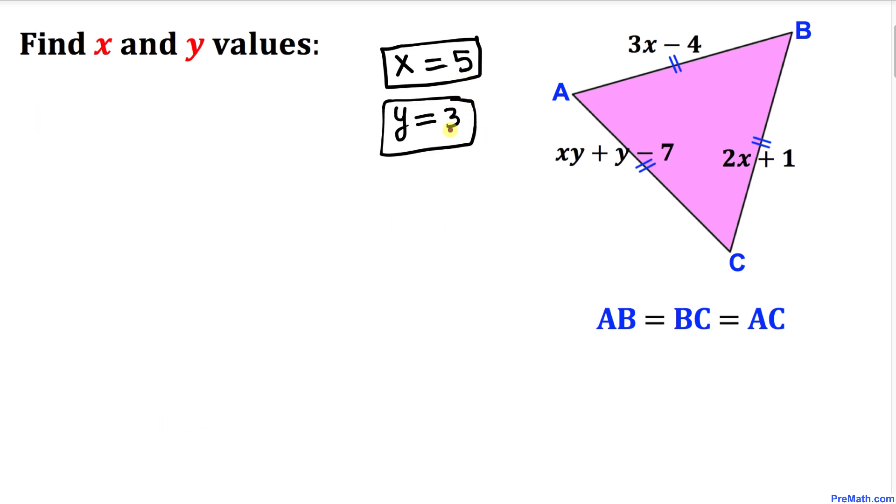Thus our x value turns out to be 5 and y equals 3. Let's plug these values in and see whether we get the right answer. When we substitute x equals 5, this becomes 3 times 5 minus 4, so that's 15 minus 4, which equals 11. So this side turns out to be 11.